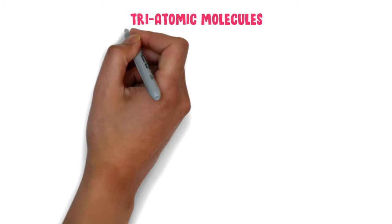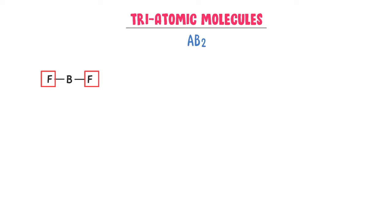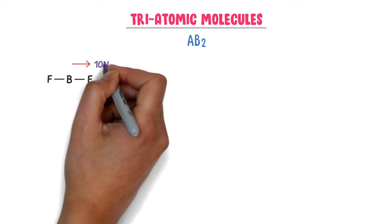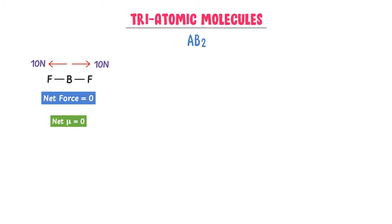Now let me teach you triatomic molecules of AB₂ type. For example, consider beryllium fluoride. On both sides are the same fluorine atoms, so they exert the same forces on the shared pair of electrons. Fluorine being more electronegative exerts a 10N force in one direction, and the other fluorine also exerts 10N in the opposite direction. The net force is 0, the net dipole moment is 0, so this is a non-polar molecule.